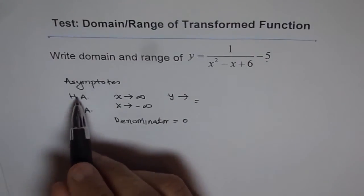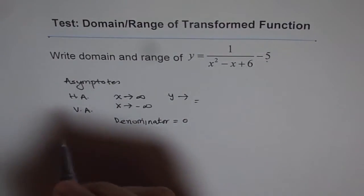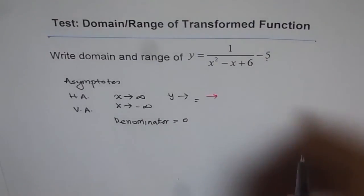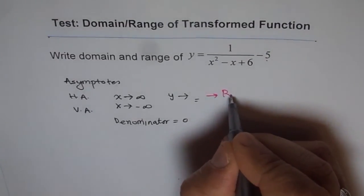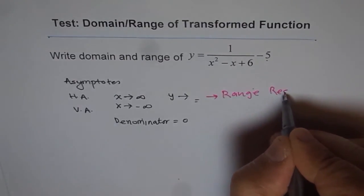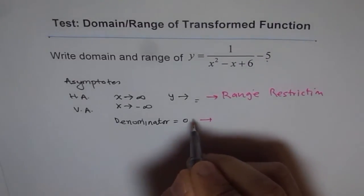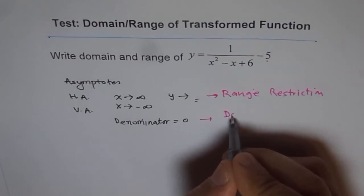And the horizontal asymptotes are not in the range. So horizontal asymptote actually tells you about the range, I should say range restriction. And vertical asymptotes will give you domain restriction.